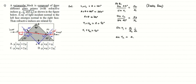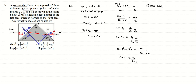Applying Snell's law at point D: sin r2 / sin 45° = μ3 / μ2, giving sin r2 = μ3 / (μ2 × √2). Since r1 + r2 = 90°, r2 = 90° − r1, so sin r2 = cos r1. Therefore, cos r1 = μ3 / (μ2 × √2).